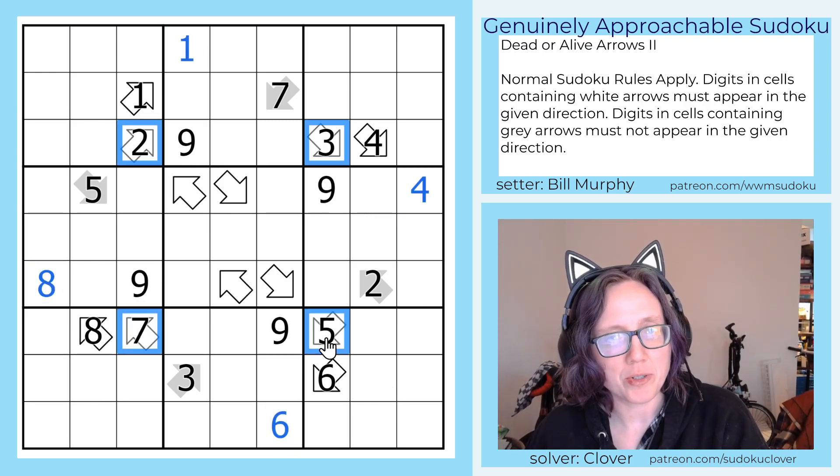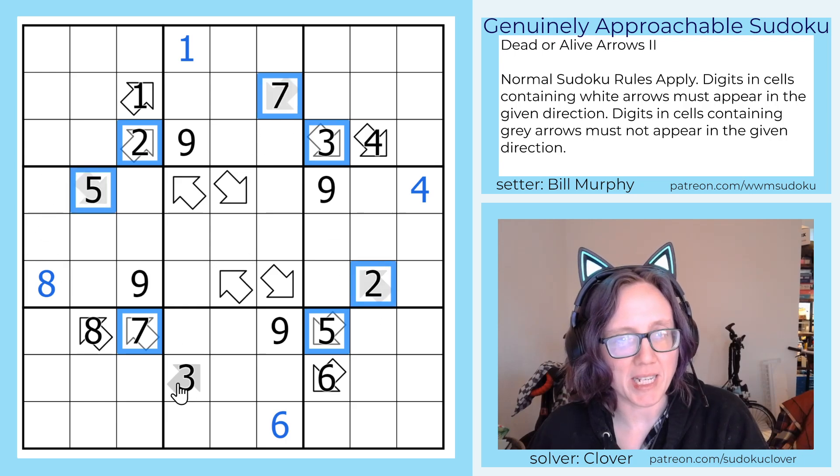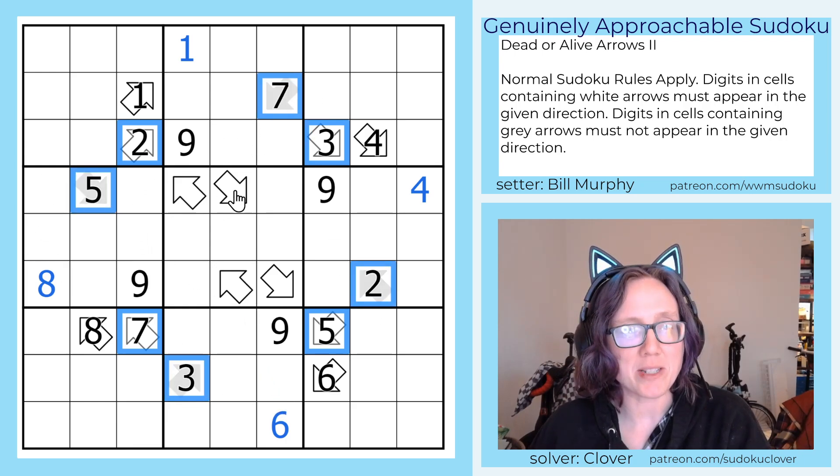And then we're going to turn to these arrows, because it is not a coincidence that they have the same digits in them as these gray arrows here.